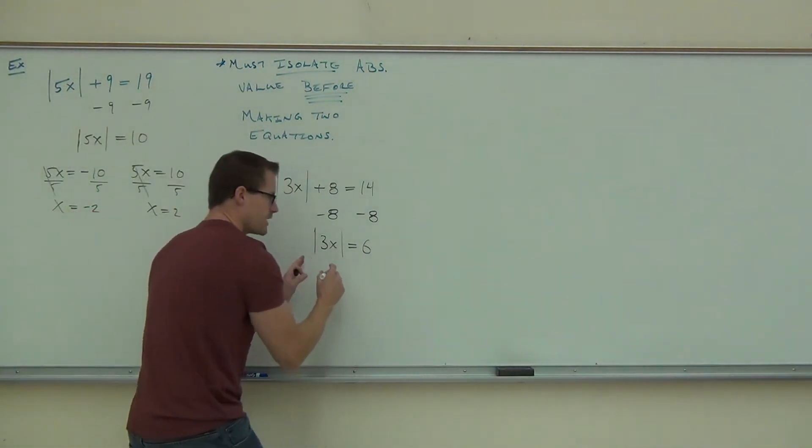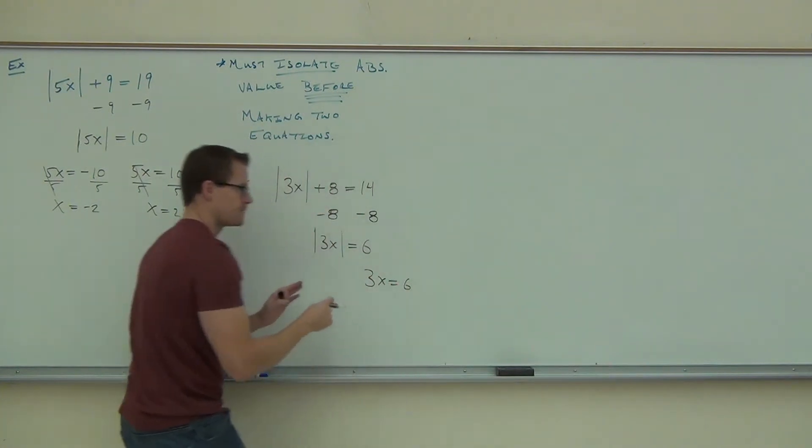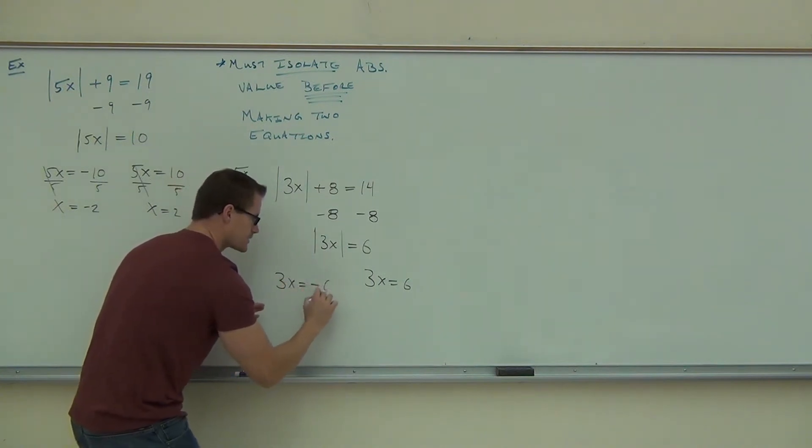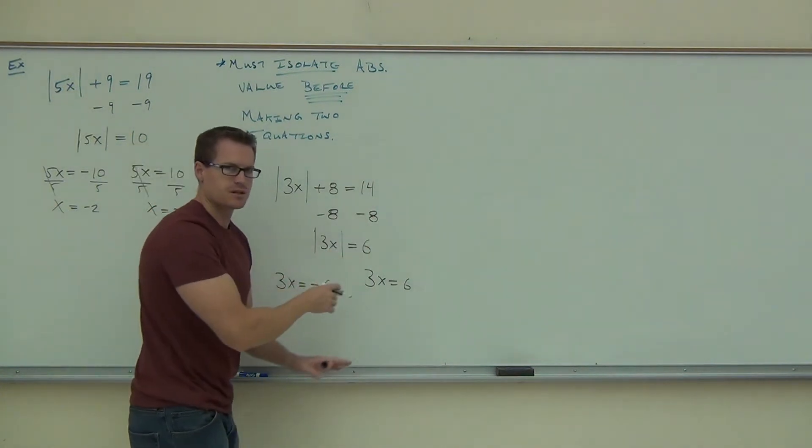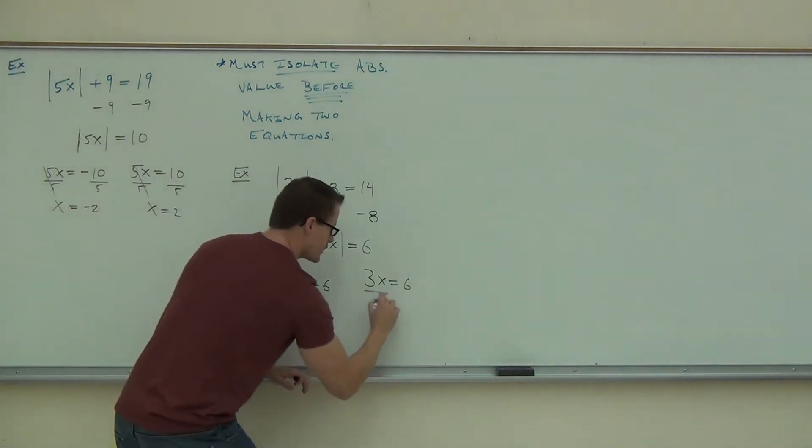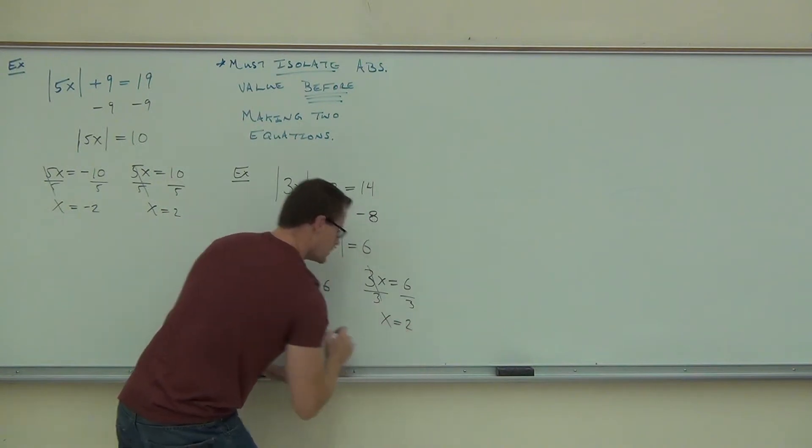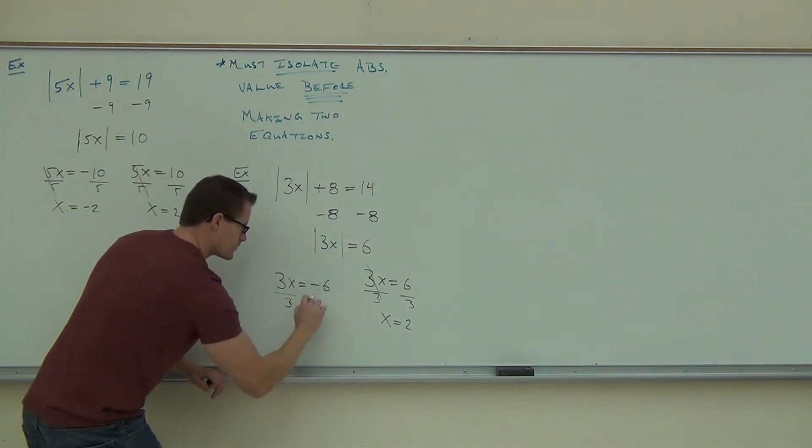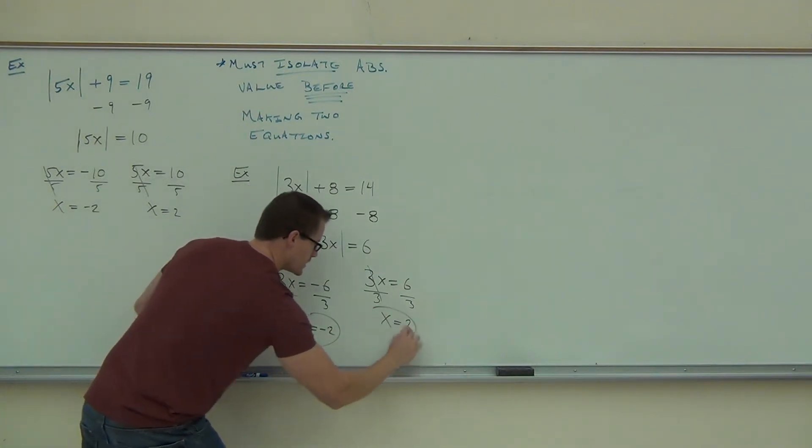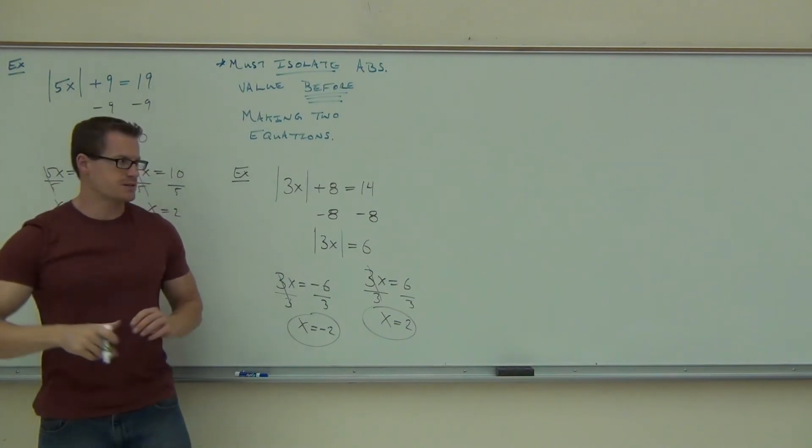We know that if the absolute value of 3x equals 6, then if 3x equals 6, absolute value of 6 is 6. If 3x equals negative 6, absolute value of negative 6 is 6. We just solve each of these individually and then we have our two solutions. So we divide by 3. x equals 2, divide by 3 over here. x equals negative 2, then we're done. How many people got that? Good for you. That's fantastic.